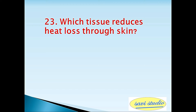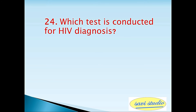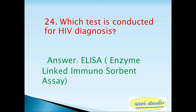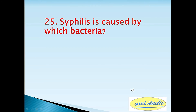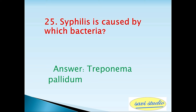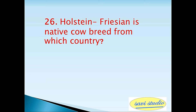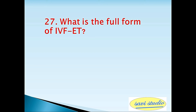Twenty-second question: Cytokinins were first discovered and isolated by — answer: Miller. Twenty-third question: Which tissue reduces heat loss through the skin? Answer: adipose tissue. Twenty-fourth question: Which test is conducted for HIV diagnosis? Answer: ELISA — Enzyme Linked Immunosorbent Assay. Twenty-fifth question: Syphilis is caused by which bacteria? Answer: Treponema pallidum.